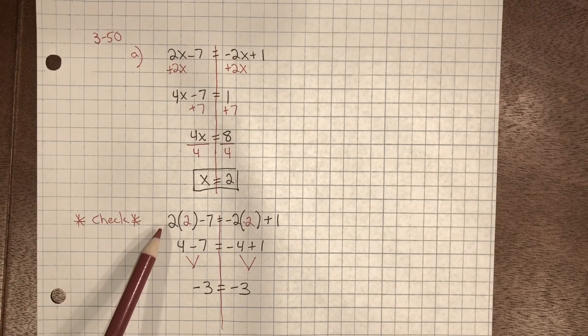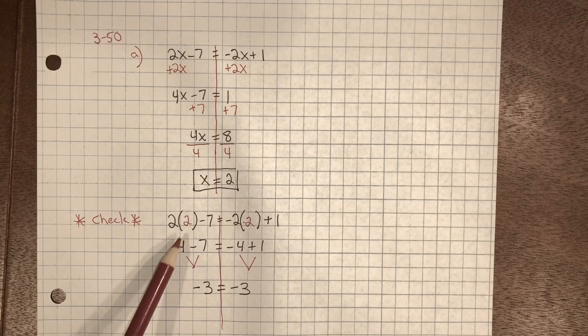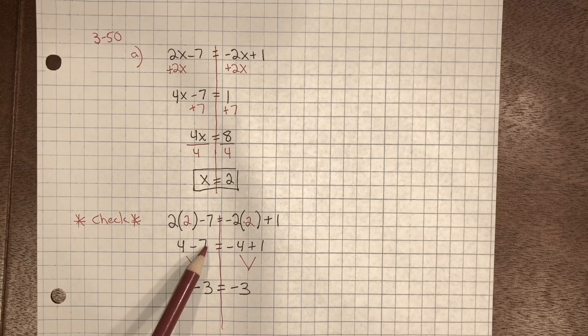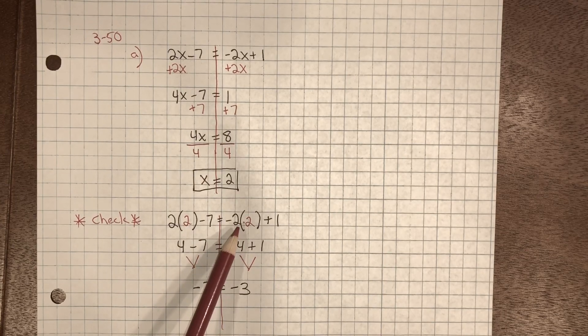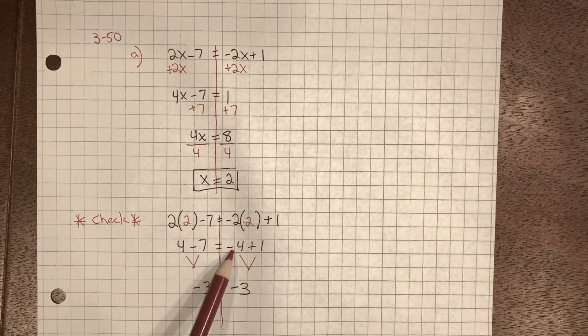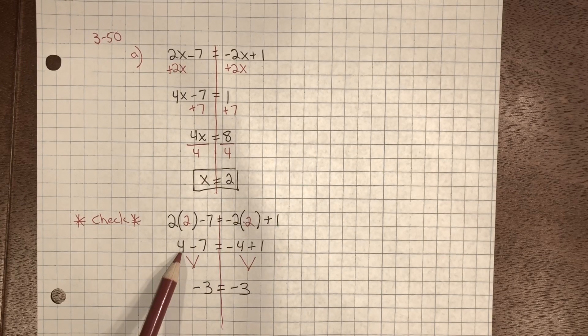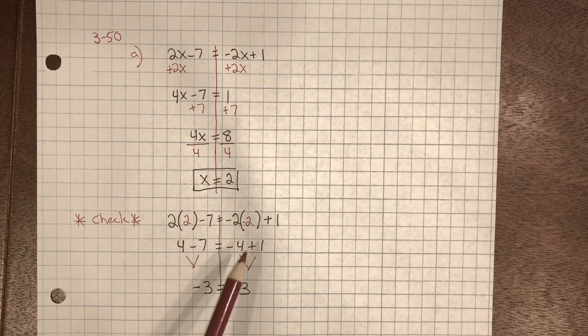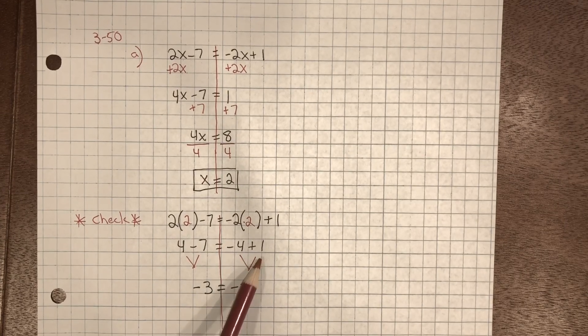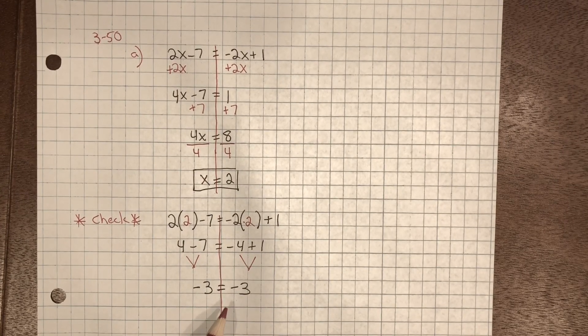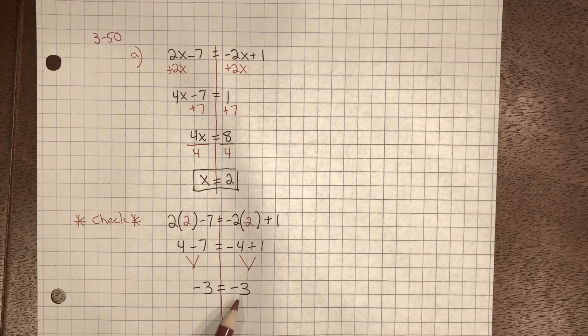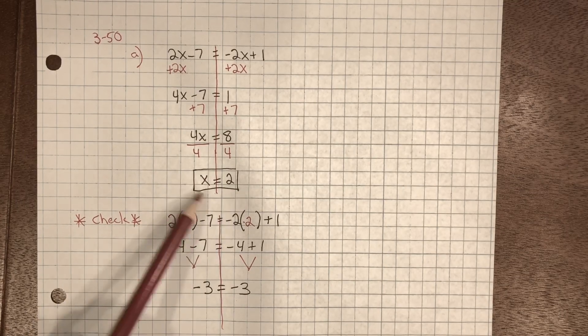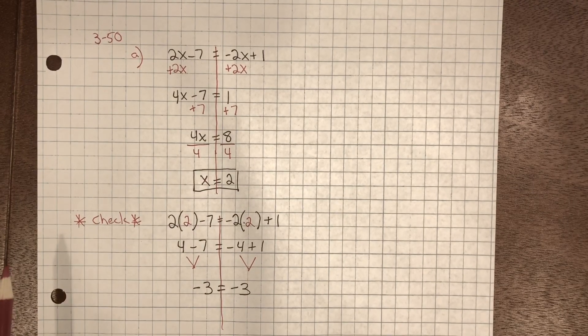And so now we have 2 multiplied by 2, which is 4 minus 7. Negative 2 multiplied by 2 is negative 4 plus 1. 4 minus 7 is negative 3. Negative 4 plus 1 is negative 3. So negative 3 does equal negative 3. So our value for x was correct.